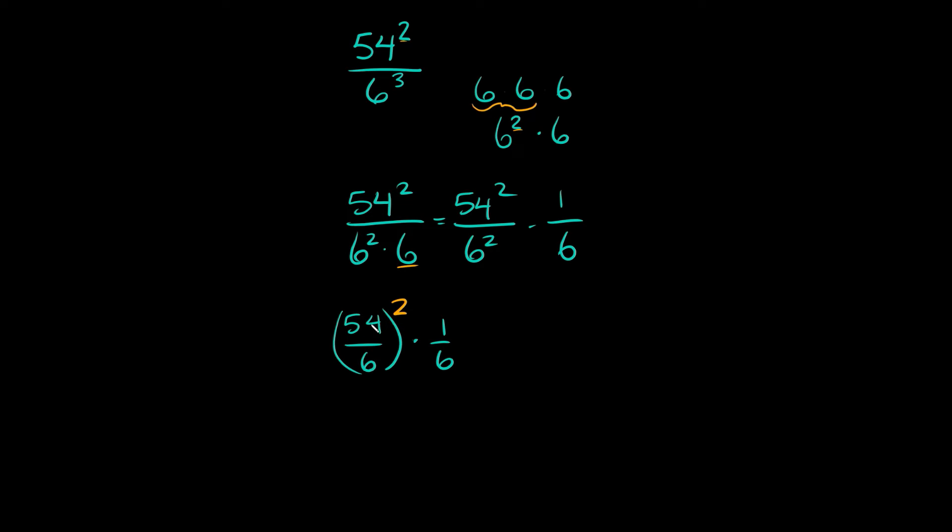Now here, 54 divided by 6 is equal to 9, so here we have 9 squared times 1 over 6. Now just multiplying straight across, 9 squared is 81, so 81 times 1 is 81 over 6, and 81 over 6 is equal to 13.5.